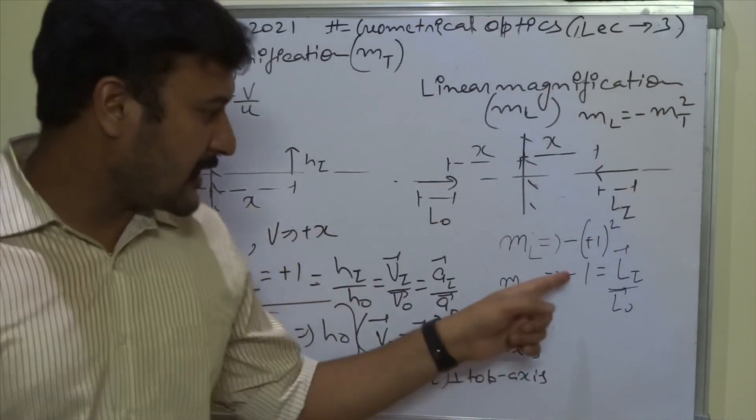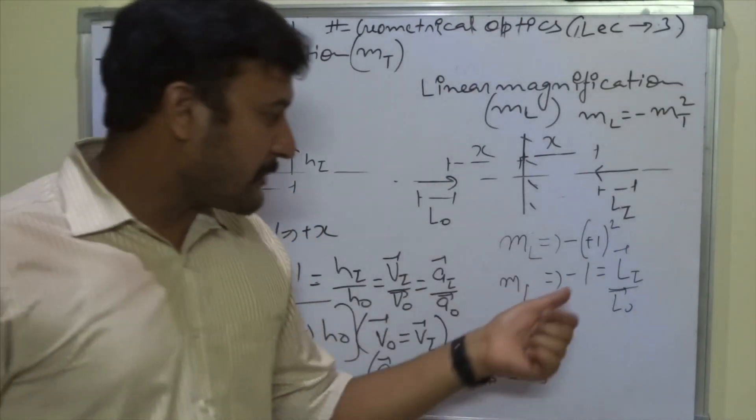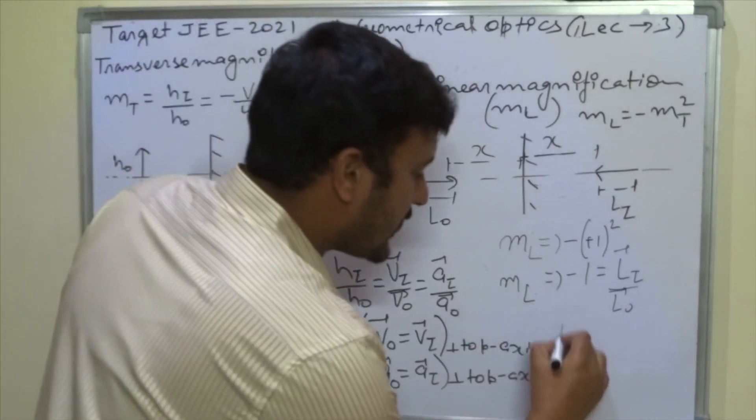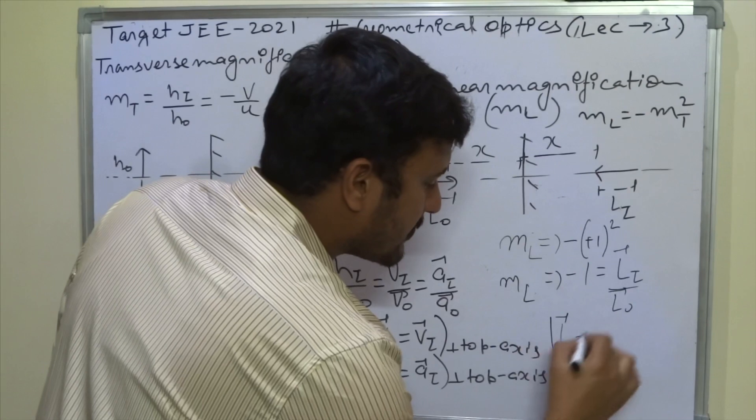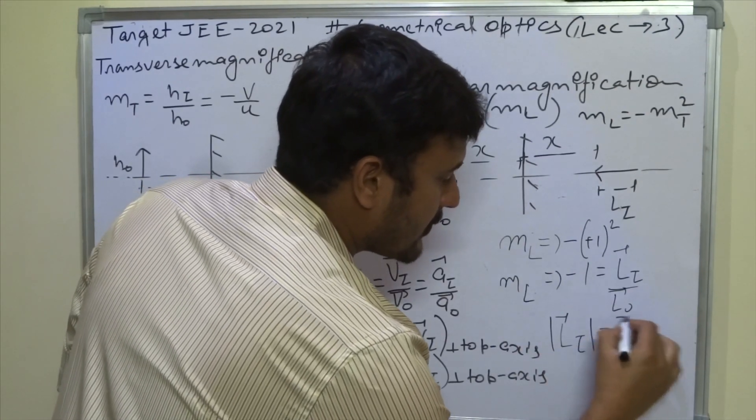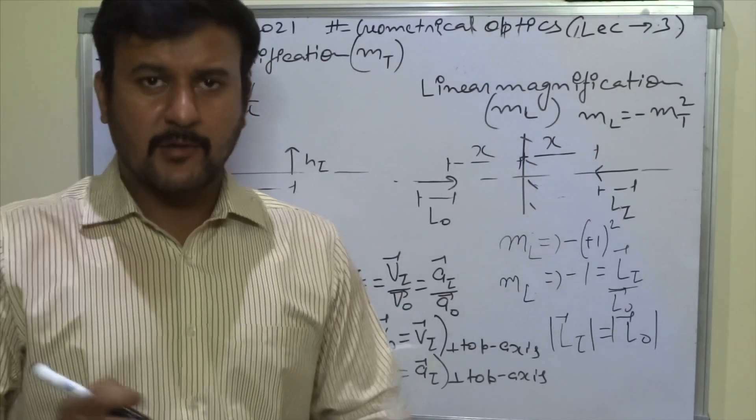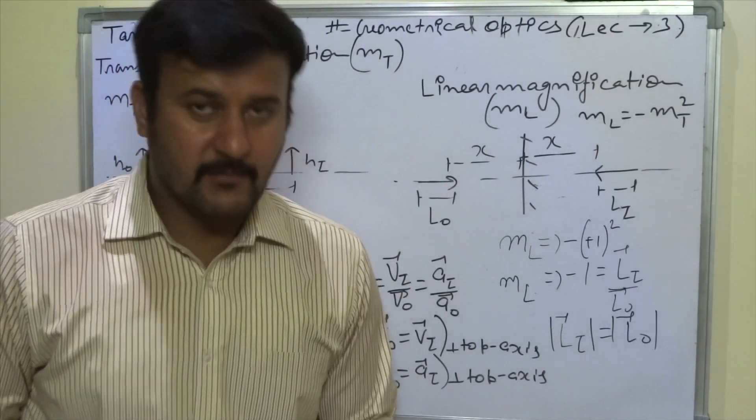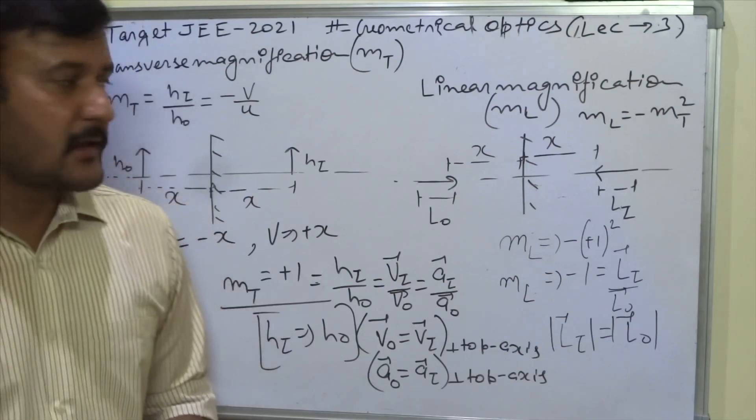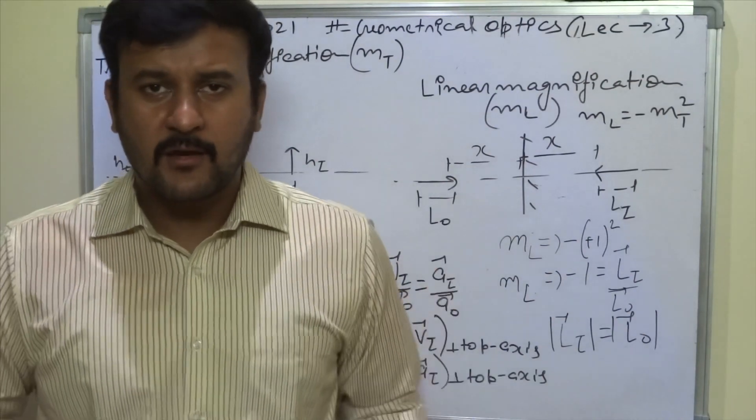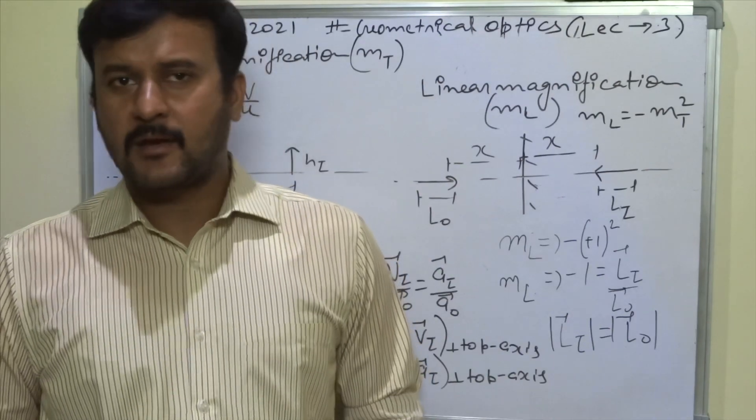So this minus is telling you inversion. And the one is telling you that in terms of magnitude, they are the same. So this is the concept. I hope you get this concept. In the next lecture, we will discuss the next topic. Thank you.